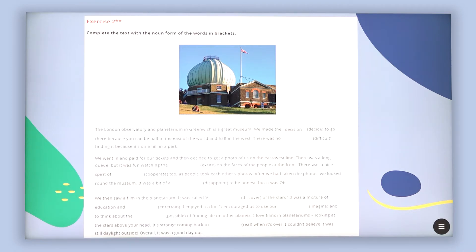Then, as you see, you are going to continue with completing the text with the noun form of the words in brackets. As you can see, the first one is given and it's decision. Then you are going to have difficult which is an adjective and the noun created there can be difficulty. You've got excite, excitement, cooperate, cooperation, disappointment, discovery, entertainment, imagination, possibility and reality.